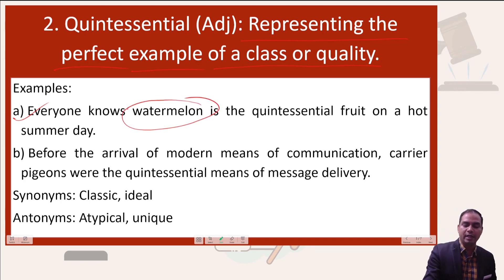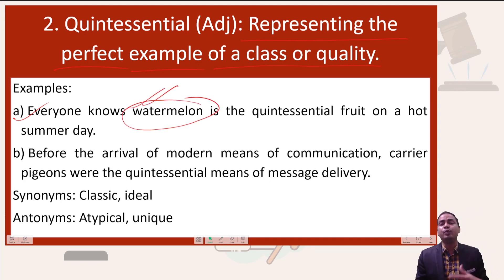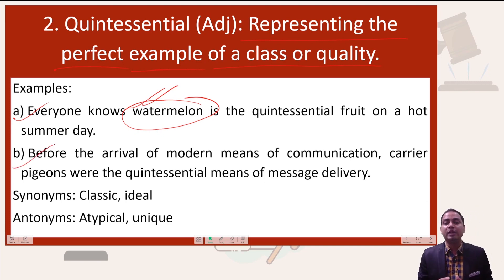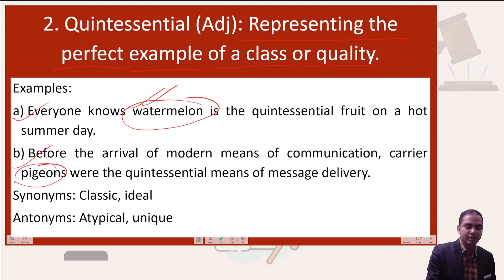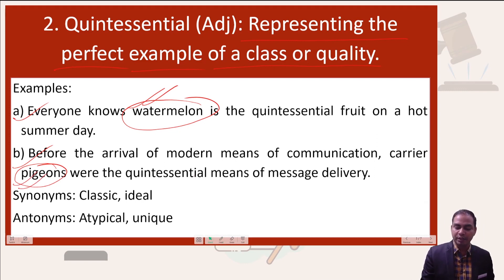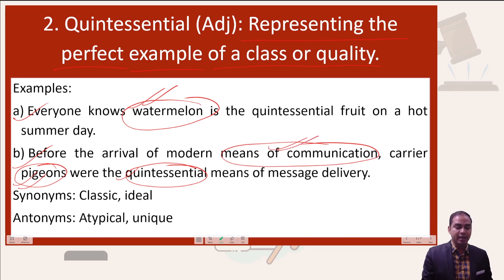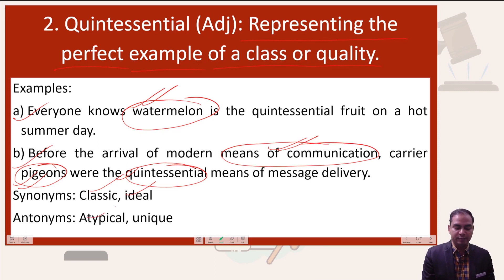Watermelon is the quintessential fruit on a hot summer day — very helpful in that way. Another example: before the arrival of modern means of communication, carrier pigeons were the quintessential means of message delivery. Synonyms are classic and ideal; antonyms are atypical and unique.